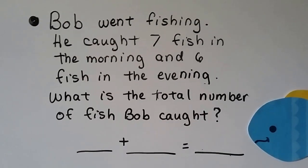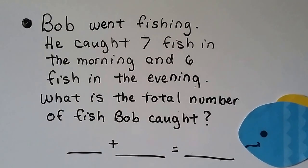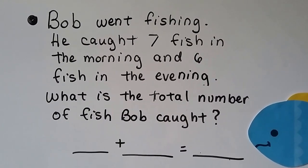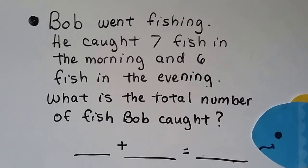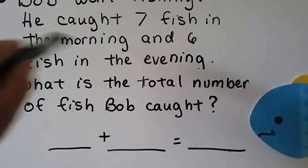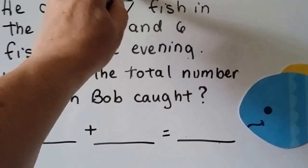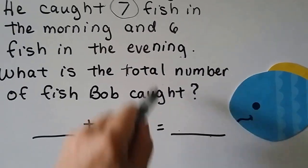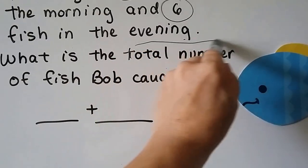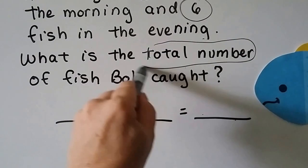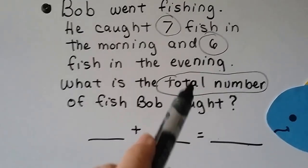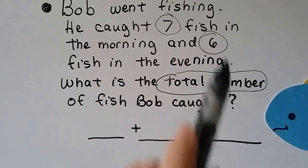Bob went fishing. He caught seven fish in the morning and six fish in the evening. What is the total number of fish Bob caught? Let's circle our important words — he caught seven in the morning, six in the evening, and it's asking for a total number. That tells me we need to total the seven and the six.